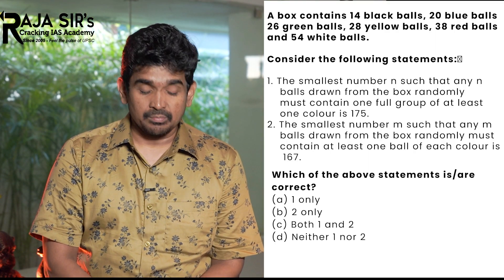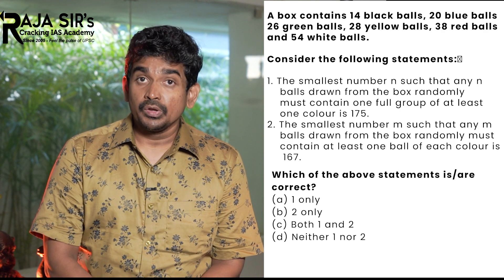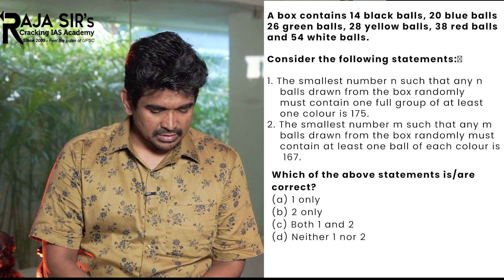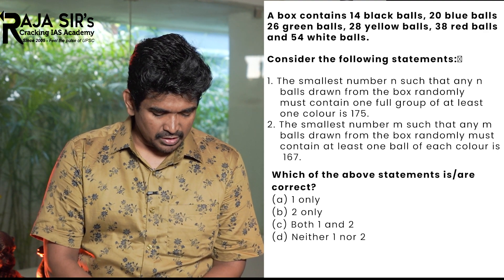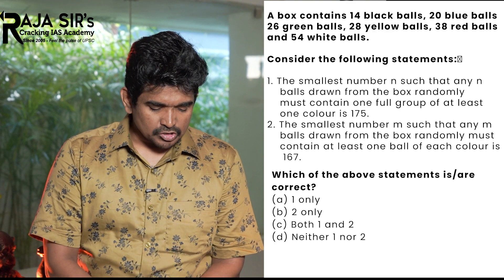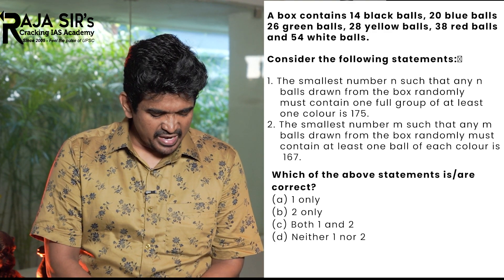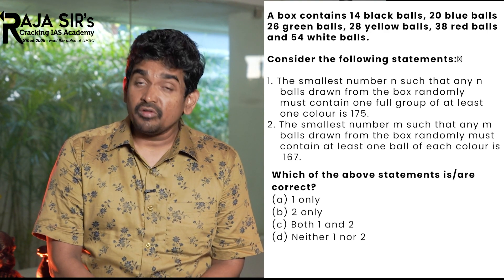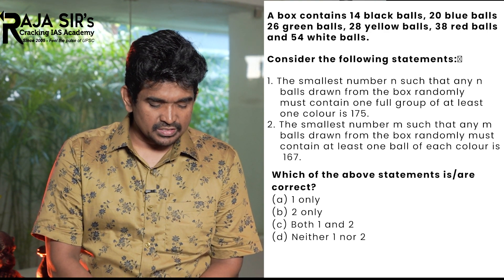Problem number 1: A box contains 14 black balls, 20 blue balls, 26 green balls, 28 yellow balls, 38 red balls and 54 white balls. Consider the following statements. Statement 1: The smallest number n such that only n balls drawn from the box randomly must contain one full group of at least one color is 175.